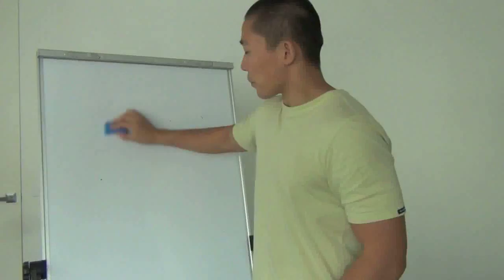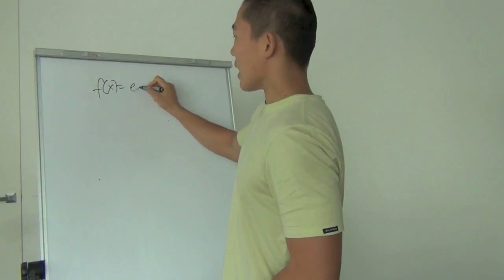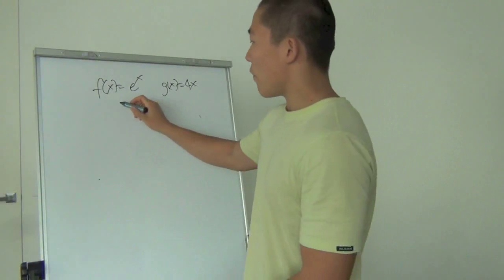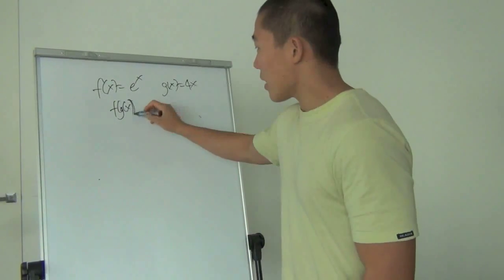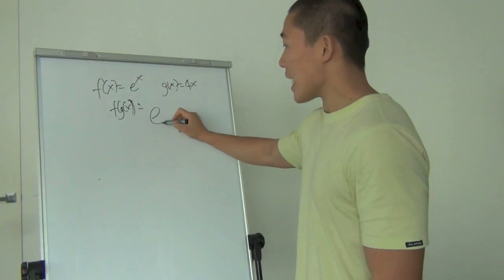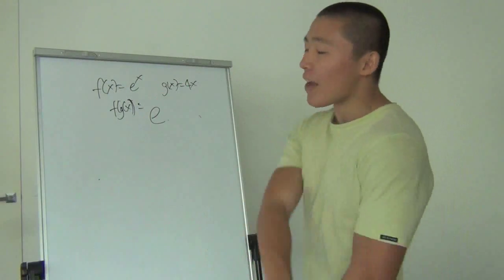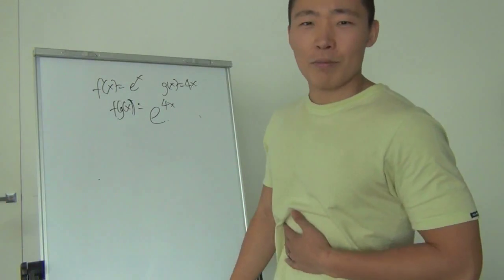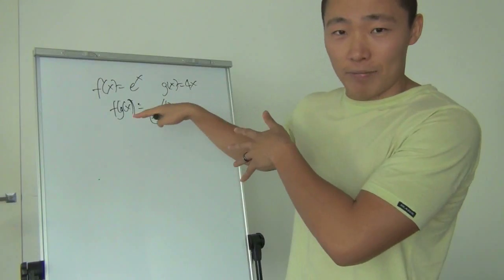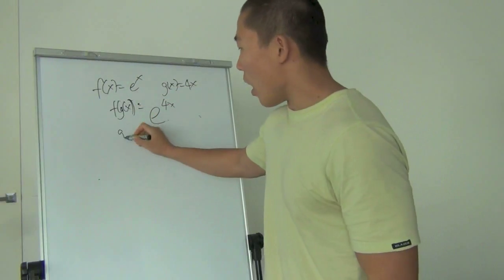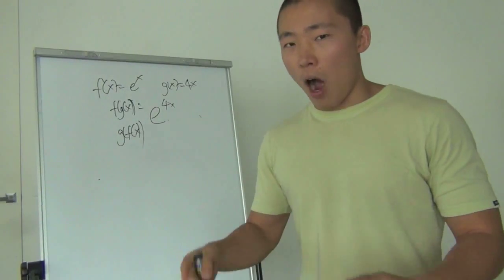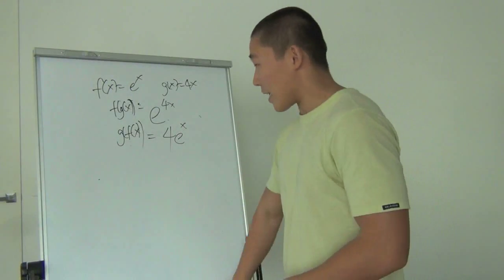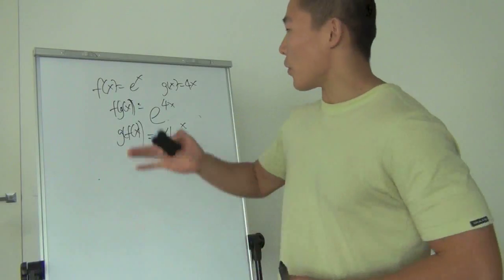Here's a worked example: f(x) = e^x and g(x) = 4x. To find fog, f(g(x)), f(x) is e^x but now instead of x we're dealing with g(x), which is 4x — so fog equals e^(4x). Alternatively, gof is 4 times e^x. That's how you go about computing the composite function equation.